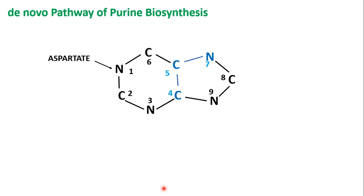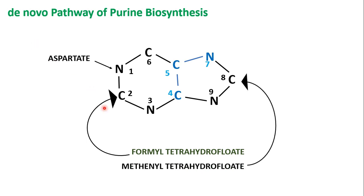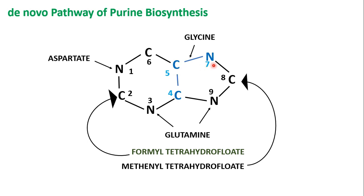N1 of the purine ring arises from the amino group of aspartate. C2 and C8 are derived from formate — C2 from formyl tetrahydrofolate and C8 from methanol tetrahydrofolate. N3 and N9 are contributed by the amide group of glutamine. C4, C5, and N7 are obtained from glycine, while C6 is from respiratory carbon dioxide. So all 9 different compounds contribute to the skeleton of the purine ring.